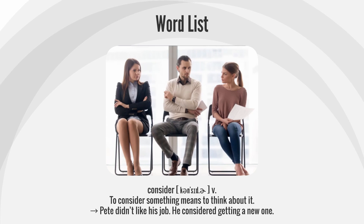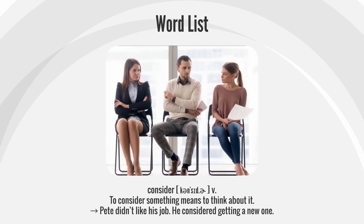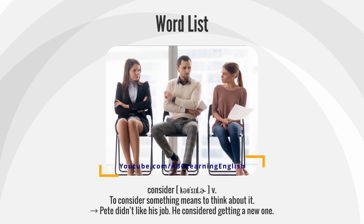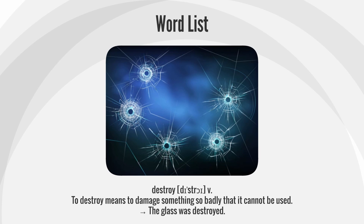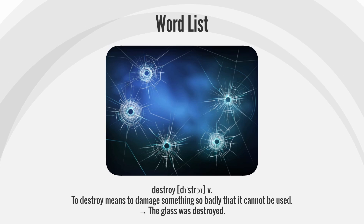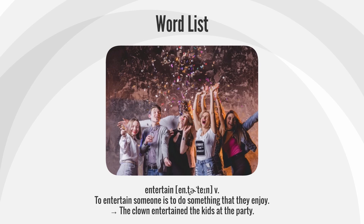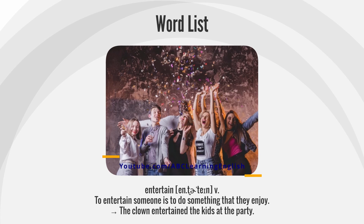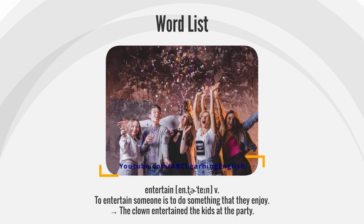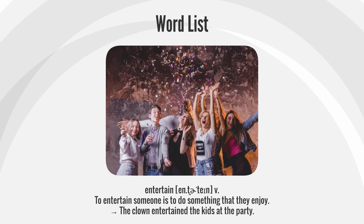Consider: To consider something means to think about it. Pete didn't like his job. He considered getting a new one. Destroy: To destroy means to damage something so badly that it cannot be used. The glass was destroyed. Entertain: To entertain someone is to do something that they enjoy. The clown entertained the kids at the party.